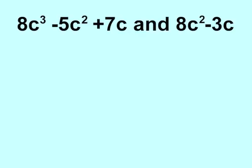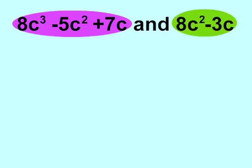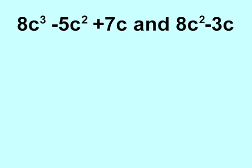We are asked to add 8c cubed minus 5c squared plus 7c and 8c squared minus 3c. You should notice that one expression has three terms, while the other expression only has two terms. You should also notice that there are different exponents in the expressions. Exponents are the little numbers in the corners.